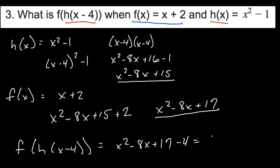And that equals x squared minus 8x plus 13. Don't get all the way to the end and add incorrectly. Take your time and make sure 17 minus 4 is 13. So our final answer is x squared minus 8x plus 13.